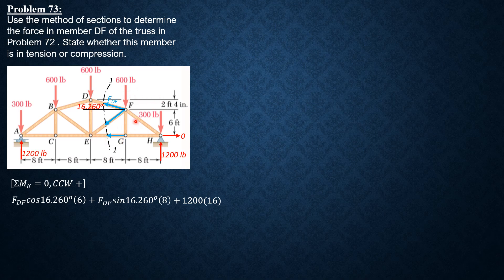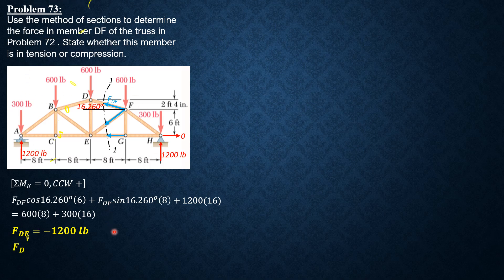FDF sine 16.26 degrees times 8 plus 1200 times 16 equals the clockwise moments: 600 times 8 plus 300 times 16. Computing for FDF gives FDF = negative 1200 pounds, or FDF = 1200 pounds compression, which is the same answer as the method of joints.